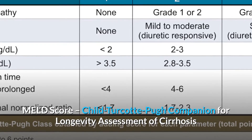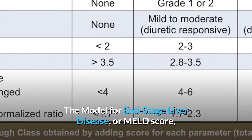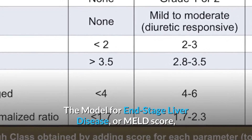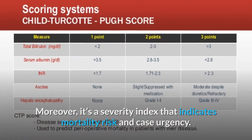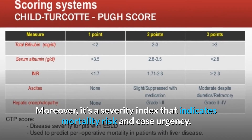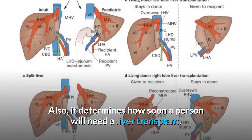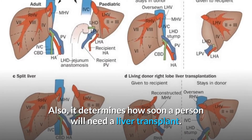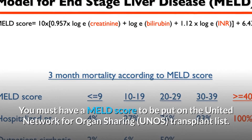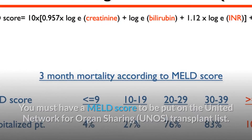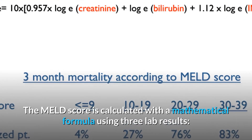The MELD score is a Child Turcotte-Pugh companion for longevity assessment of cirrhosis. The Model for End-Stage Liver Disease (MELD score) is used to prioritize adult patients for liver transplants. It is a severity index indicating mortality risk and case urgency, and determines how soon a person will need a liver transplant. A MELD score is required to be placed on the UNOS transplant list.